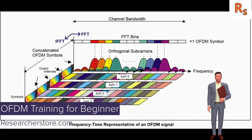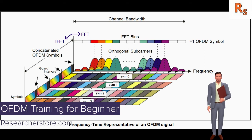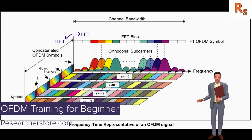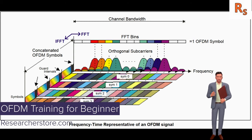Orthogonal frequency division multiplexing is the technology behind many high-speed systems such as Wi-Fi IEEE 802.11 A, G, N, AC, WiMAX IEEE 802.16, and 4G mobile communications LTE. A close cousin, discrete multi-tone (DMT), is used in ADSL and powerline communication systems.